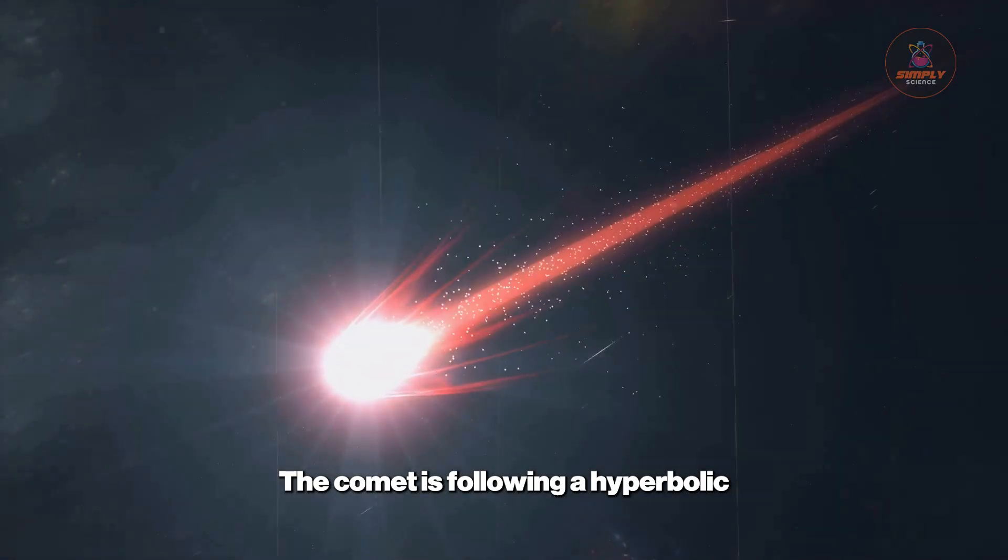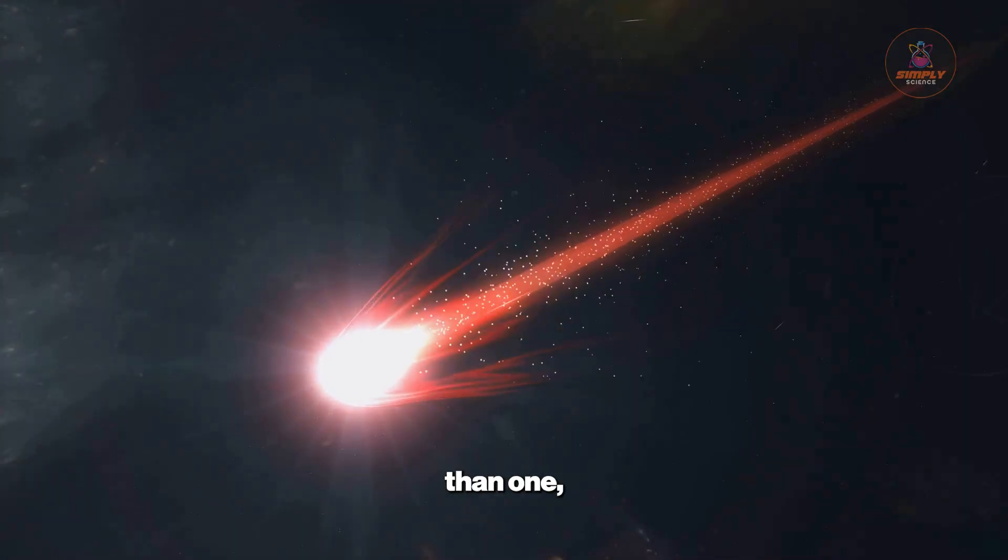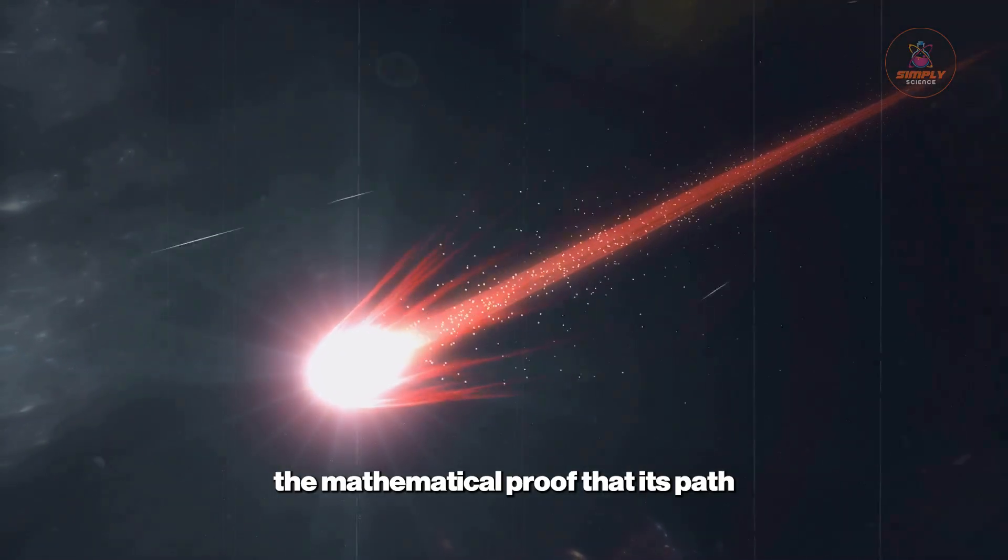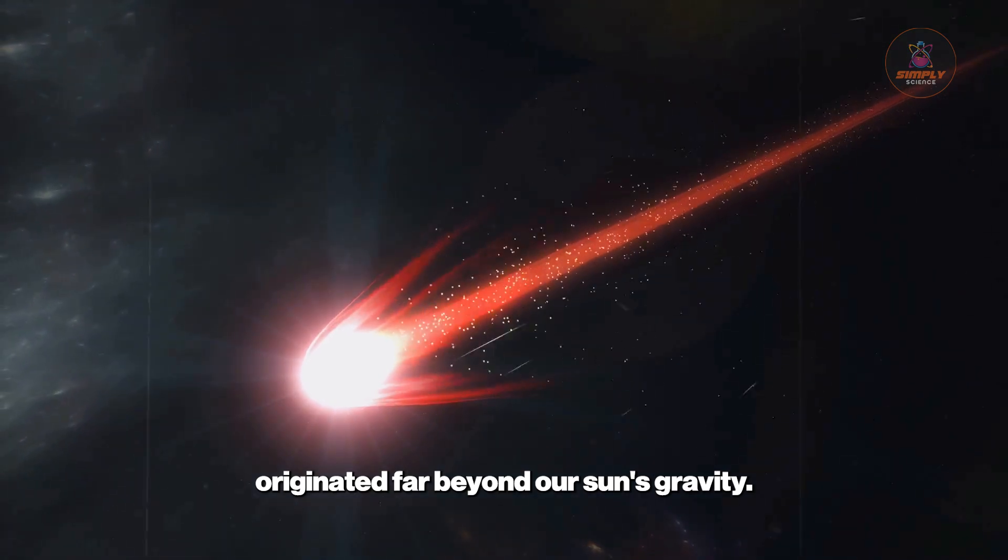The comet is following a hyperbolic trajectory with an eccentricity greater than 1, the mathematical proof that its path originated far beyond our Sun's gravity.